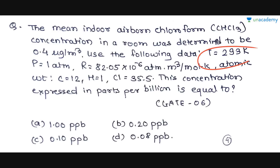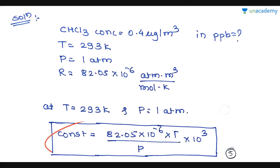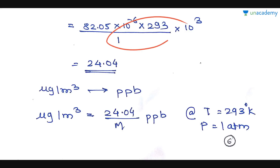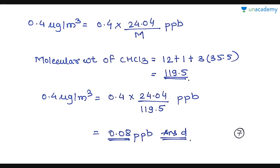Don't get confused if the temperature or pressure doesn't match standard temperature and pressure — you need to first calculate the constant. These were some types of examples asked on the concentration of air pollutants in the air. These are some important conversions which you need to remember, and practicing more questions will improve you in this section. Please do rate, review, and recommend my courses and lessons. Do share this video and subscribe to our YouTube channel. Thank you.